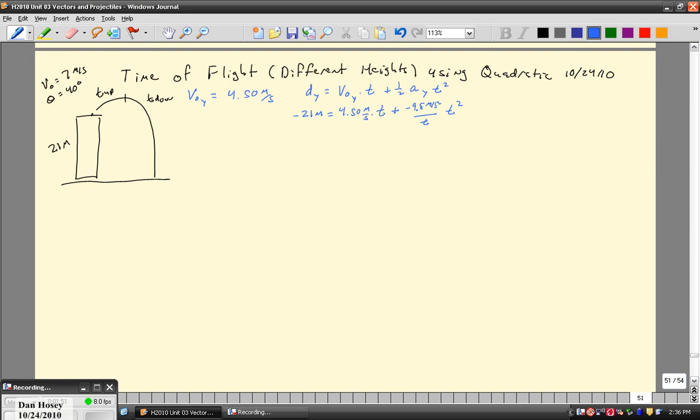If I rearrange this, I can get a quadratic equation. So if I bring this over to this side, to the left side, I'm going to get 4.9 t squared, and I bring this over minus 4.5 t minus 21 equals 0. I'm going to get what looks like an a of 4.9, a b of negative 4.5, and a c of negative 21.